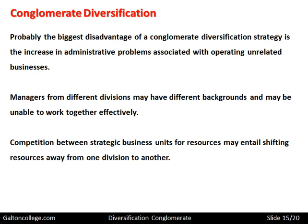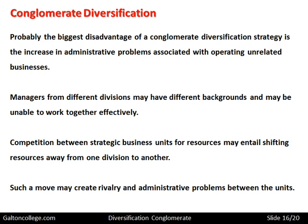Competition between strategic business units for resources may entail shifting resources away from one division to another. In conglomerates, each business within the conglomerate will be fighting and arguing for resources. There will also be resentment if one part of the conglomerate is subsidising the other part. There could be issues about remuneration if one part is being paid more than the other. So there are also rivalry and administrative problems between different parts of the conglomerate.